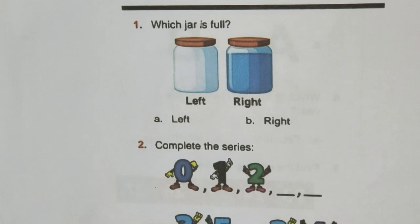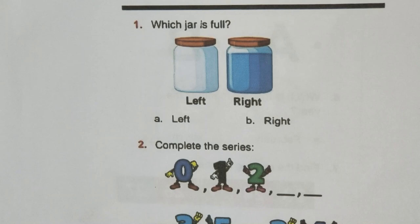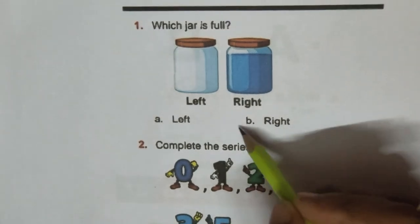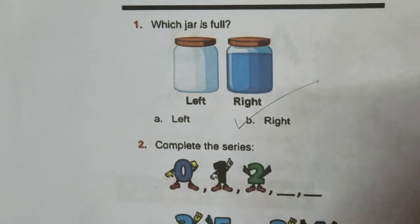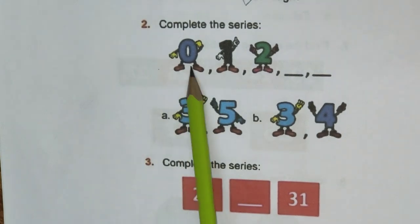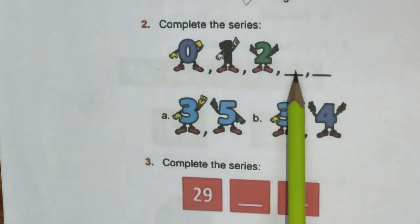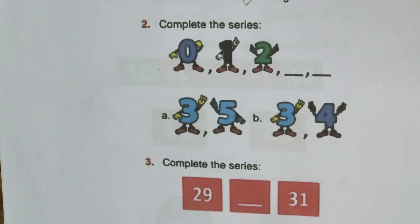Question 1: Which jar is full? Among left and right, I can see the right jar is full with the blue liquid and the level of the liquid is at the top, hence we mark B as the right answer. Question 2: Complete the series — 0, 1, 2. Obviously this will be 3 and 4, so option B is the right answer.